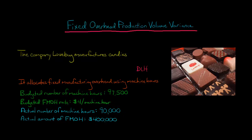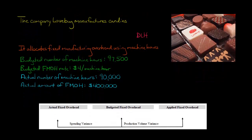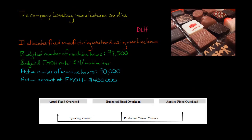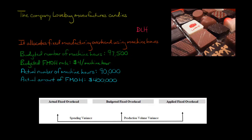We can now calculate the fixed overhead volume variance. The production volume variance is going to be the difference between the budgeted fixed overhead and the applied fixed overhead. We can ignore the actual fixed overhead because that's used to calculate the spending variance. We're going to be concerned with these two — budgeted and applied.